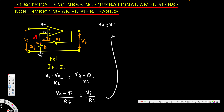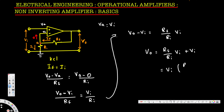Let's continue. So vo minus vi is going to be equal to rf divided by ri, times vi. Then if we bring vi to this side, vo is equal to rf over ri times vi plus vi. If we factor out vi, this gives us vo equals vi times (rf over ri plus 1). And that's how we calculate the output voltage for a non-inverting amplifier. I hope this helps, thanks for watching.